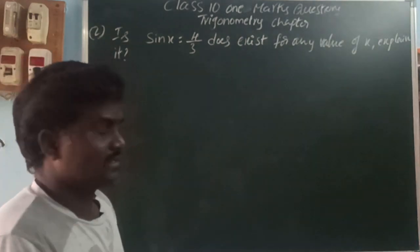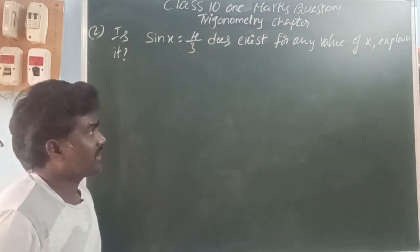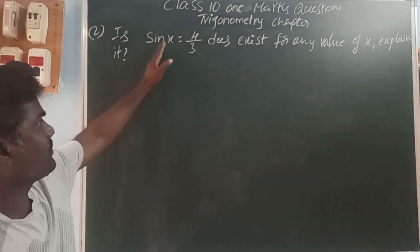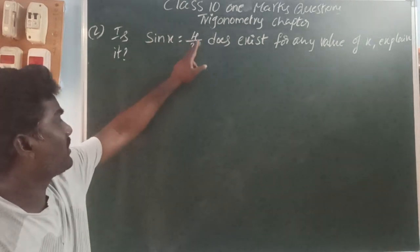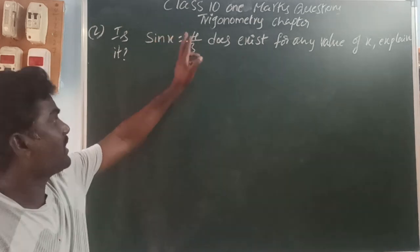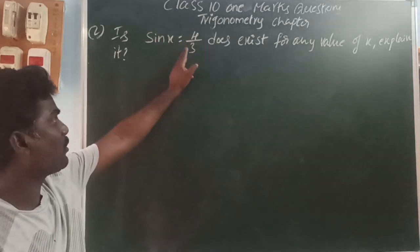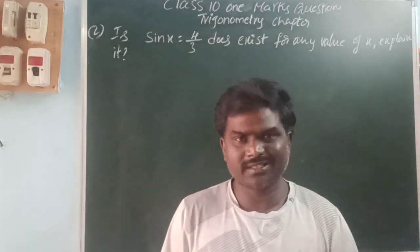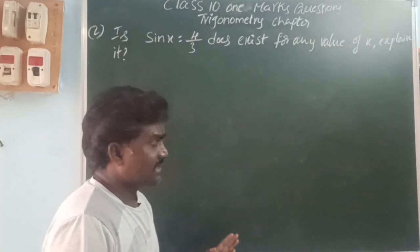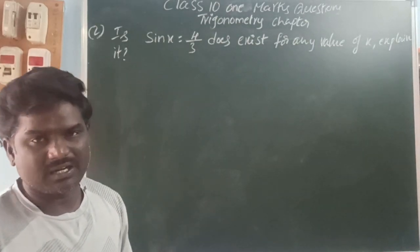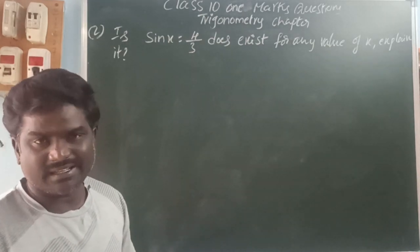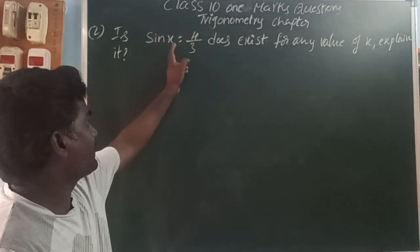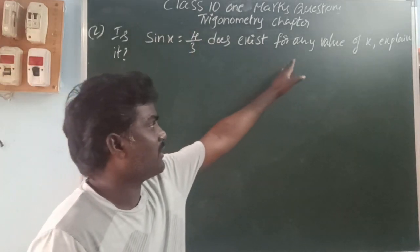Next question: if sin x equals 4 by 3, does this exist for any value of x? Sin x means the given ratio is 4 by 3, so opposite is 4 parts and hypotenuse is 3 parts. The hypotenuse is the largest side — the side opposite 90 degrees, or the largest side in a given triangle. Is sin x equal to 4 by 3 possible for any value of x?